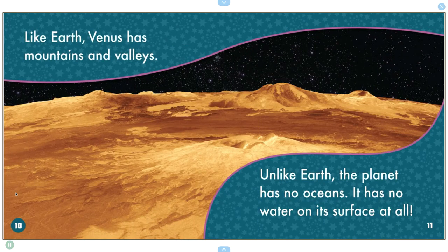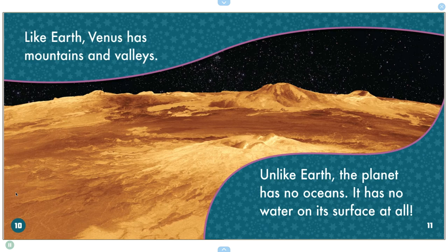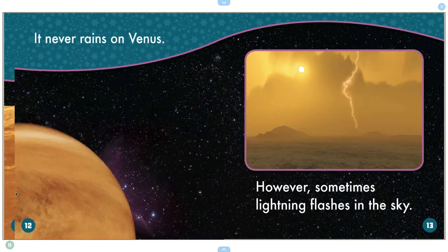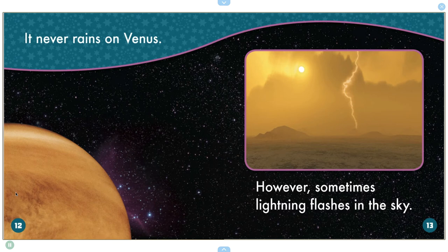Like Earth, Venus has mountains and valleys. Unlike Earth, the planet has no oceans. It has no water on its surface at all. It never rains on Venus.